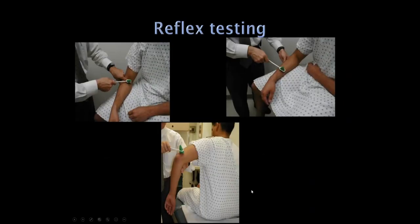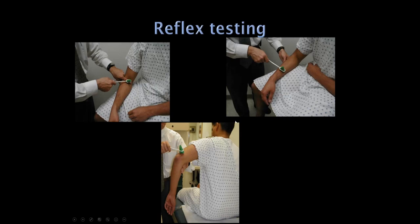For reflex testing: radiculopathies and plexopathies are lower motor neuron. With a C5/C6 radiculopathy or superior trunk plexopathy, the biceps reflex and brachioradialis reflex will be diminished. With a C7 radiculopathy, the triceps reflex will be diminished. Carpal tunnel syndrome is the most common cause of a numb hand; C7 radiculopathy is probably the second most common cause. We don't have a reliable C8T1 reflex, so reflex testing is most useful for C5/C6 and C7.